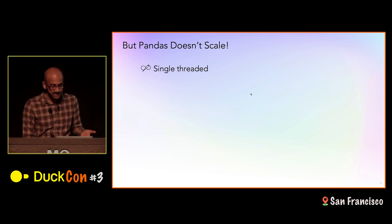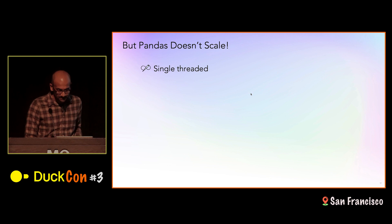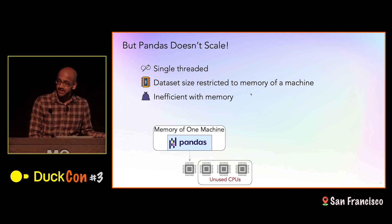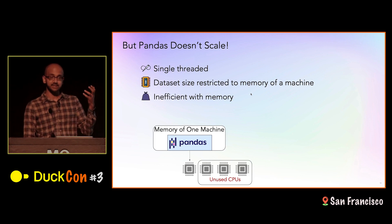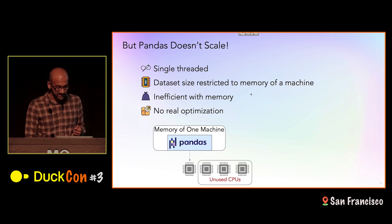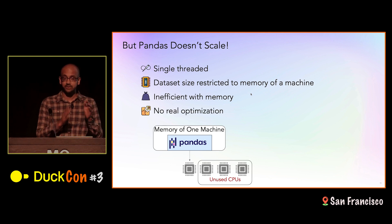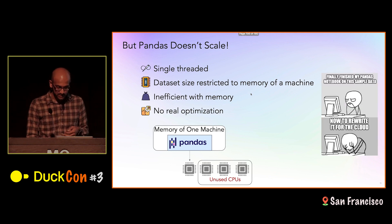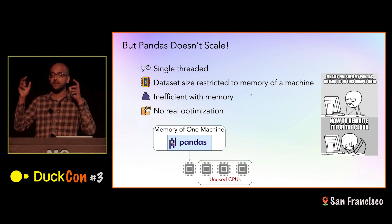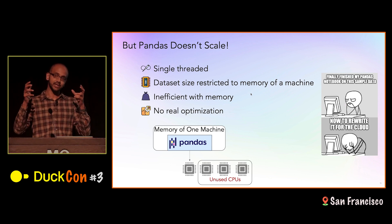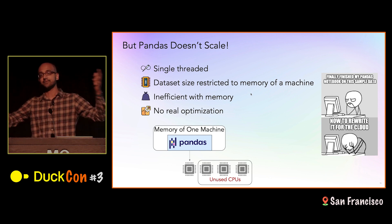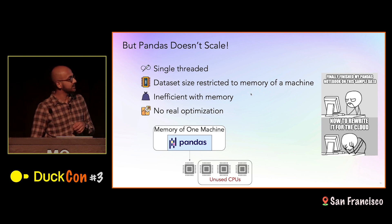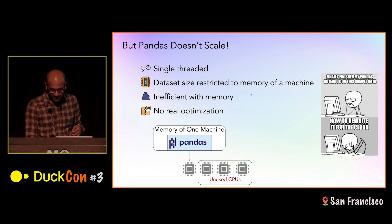The problem with pandas is that it doesn't scale. It's single-threaded — throwing more cores at the problem doesn't help. The dataset size is restricted to the memory of the machine, and it's actually pretty inefficient with memory. The usual rule of thumb is you allocate 10x the dataset size in terms of memory to operate on it effectively. And there's no real optimization — pandas operations one after the other won't be reordered or optimized in any way. So what usually ends up happening is you operate on your dataset in a notebook on a sample, and then have to rewrite it into SQL or PySpark or Snowpark to run it on the cloud.